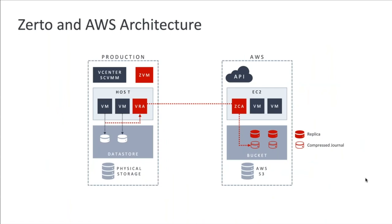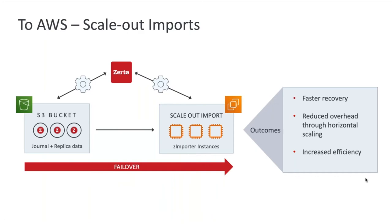Looking at the Zerto for AWS architecture — it's largely the same: ZVMs and VRAs on-premise. A slight difference on the AWS side is we still have a ZCA, also available from the marketplace, but instead of page blob and block blob, we store everything in S3 buckets — both replica disks and compressed journal files go into the same S3 buckets. And with scale-out Z import instances, we do exactly the same horizontal scaling as in Azure for increased efficiency and reduced cost rather than having large cloud appliances running 24 by 7.